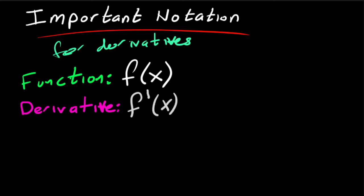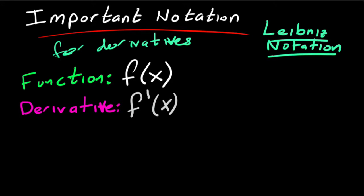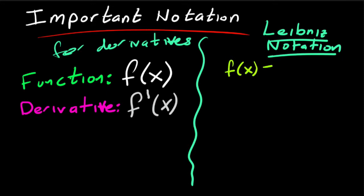That's the first way, but we also have another way of writing it called Leibniz notation, which is very useful in a lot of different ways. Instead of writing f of x, I'm also going to write it as y — you plug in an x value and you get a y value.